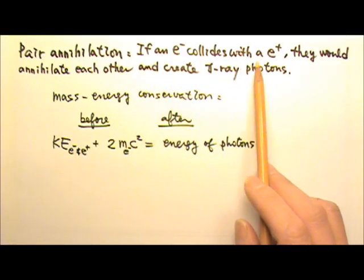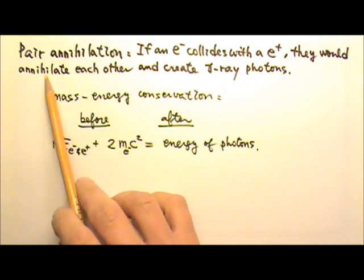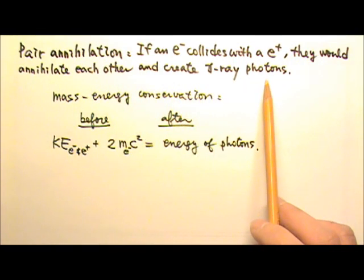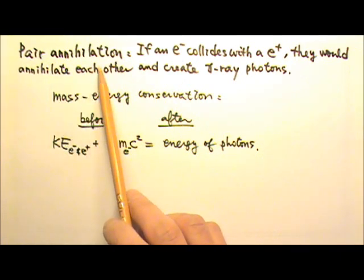If an electron collides with a positron, they would annihilate each other and create gamma ray photons. This is called pair annihilation.